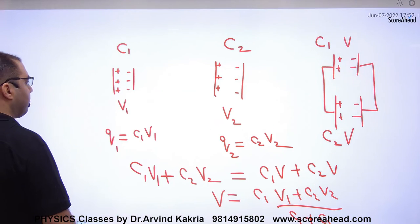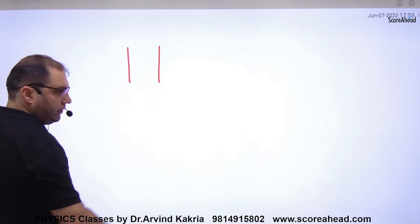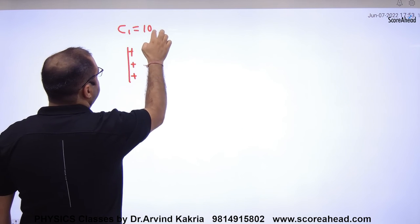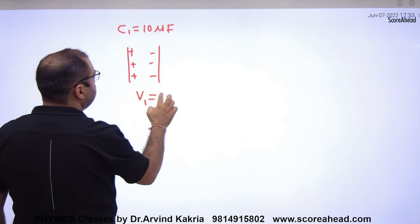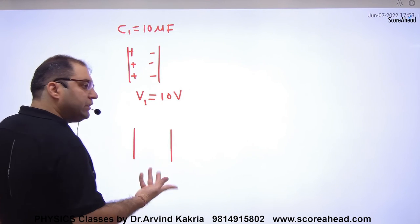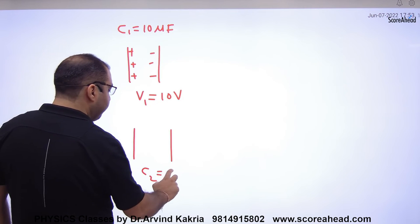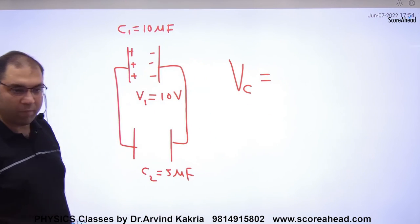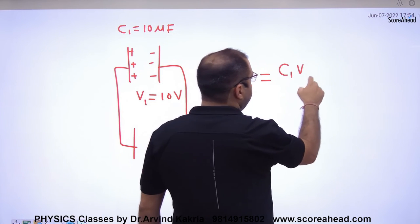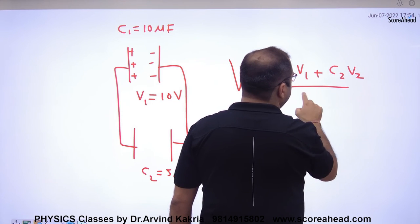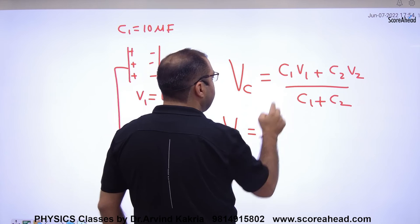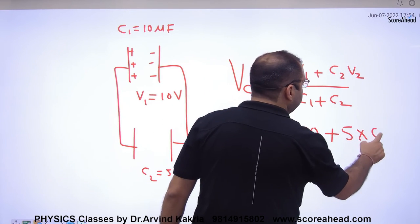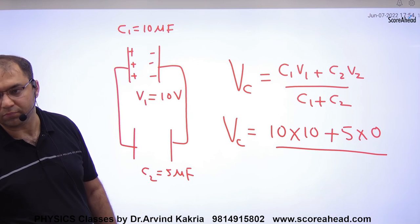Suppose you have a capacitor with capacitance C1 = 10 microfarad and a potential difference of 10 volts across its plates. Another capacitor is uncharged with capacitance C2 = 5 microfarad. When I join them together, find the common potential. We apply the formula: V = (C1·V1 + C2·V2) / (C1 + C2) = (10 × 10 + 5 × 0) / (10 + 5). V2 = 0 because there is no charge on the second capacitor.